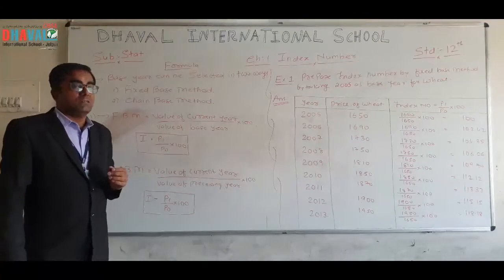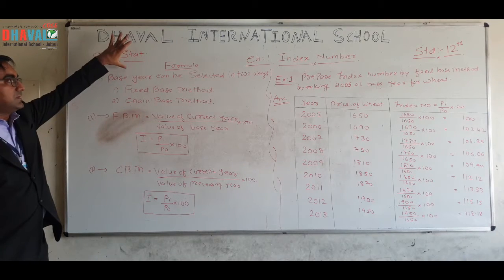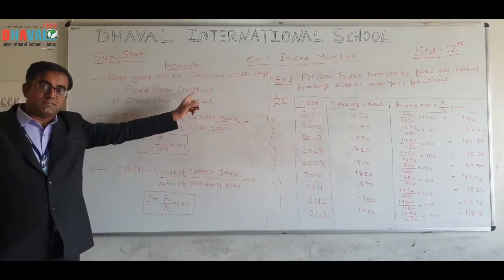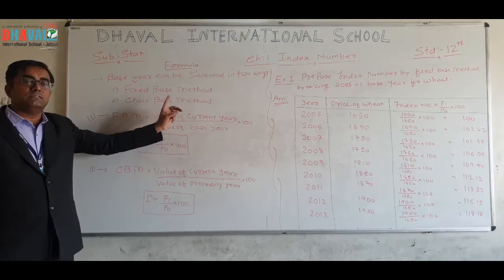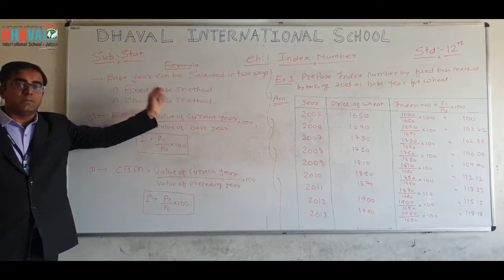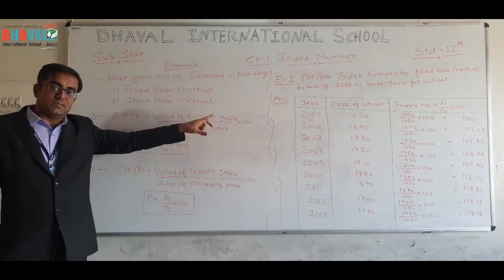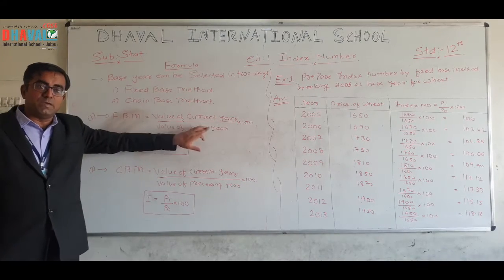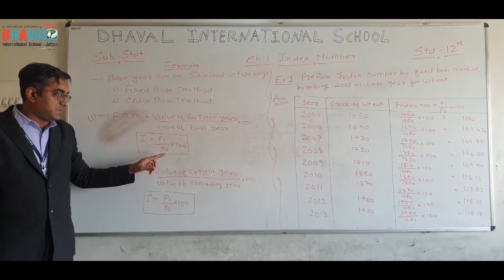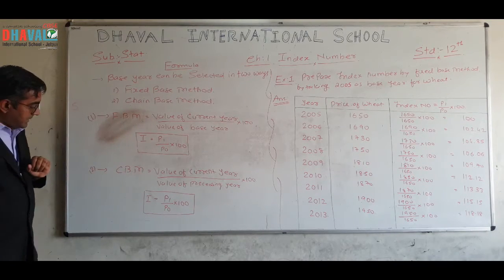Now we will start the numericals of the index number. First we see what is the base. You can calculate the base by two different ways: number one, Fixed Base Method (FBM), and number two, Chain Base Method (CBM). The formula of the Fixed Base Method is: value of current year divided by value of base year, into 100 — written as I = P1 / P0 × 100.